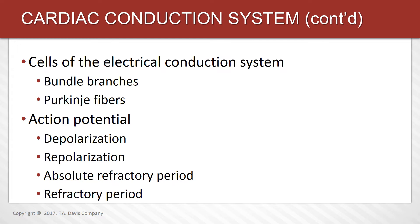The P wave represents atrial depolarization. Repolarization is the movement of ions back into the resting phase — the resting phase of the heart. The cardiac resting membrane potential is negative 90 millivolts, which allows the initiation of another action potential. Repolarization is seen in the T wave — the ventricle must relax. So you see P wave, QRS, T. That T wave relaxation is important. There are five phases of the action potential: depolarization, repolarization, absolute refractory period, and relative refractory period.